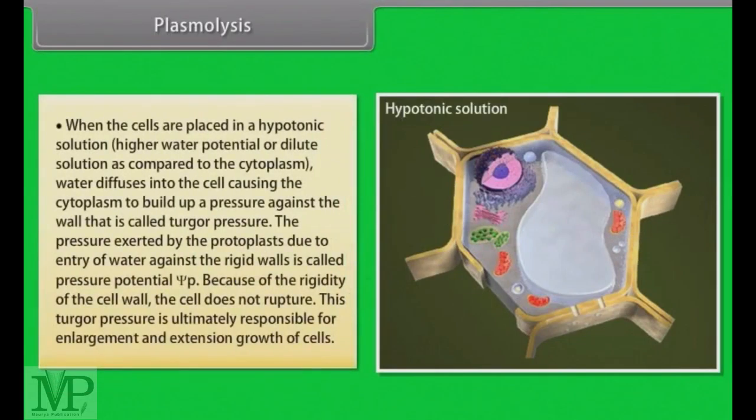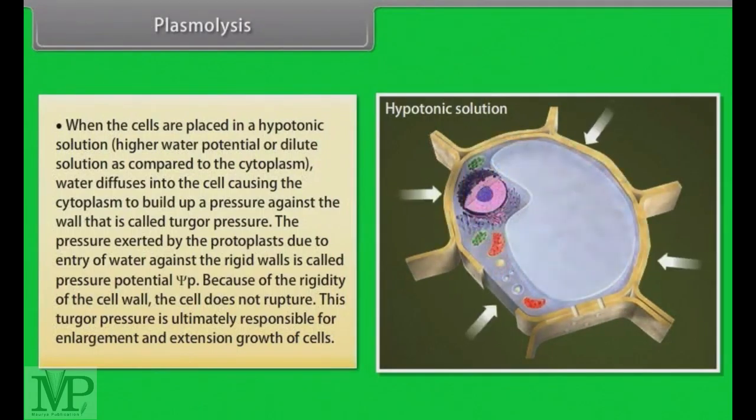When the cells are placed in a hypotonic solution which means higher water potential or dilute solution as compared to the cytoplasm, water diffuses into the cell causing the cytoplasm to build up a pressure against the wall that is called turgor pressure. The pressure exerted by the protoplasts due to entry of water against the rigid wall is called pressure potential. Because of the rigidity of the cell wall, the cell does not rupture. This turgor pressure is ultimately responsible for enlargement and extension growth of cells.